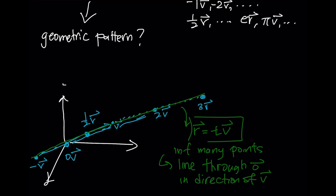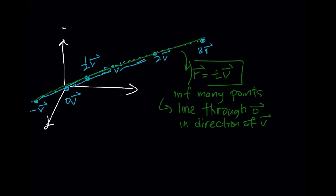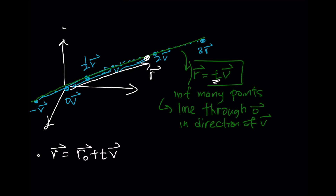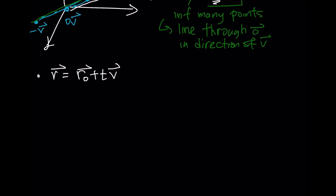This is our first linear object. This line extends out to infinity — the larger we take the number in front of V, the further out we push the vector. R is the position vector of some point along the line; you set the dial of T and it produces a vector R that lives somewhere along the line. What would happen if I added some sort of constant vector?